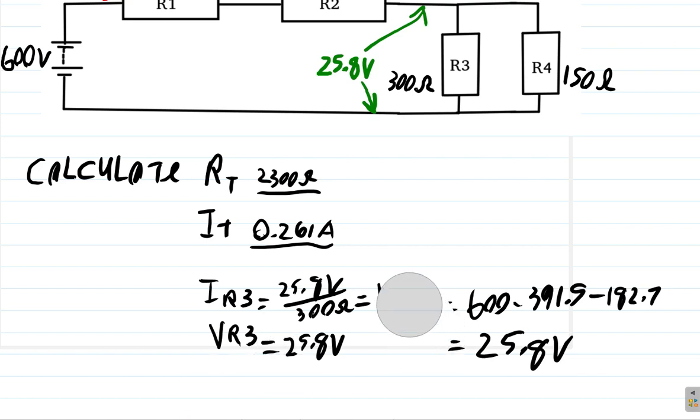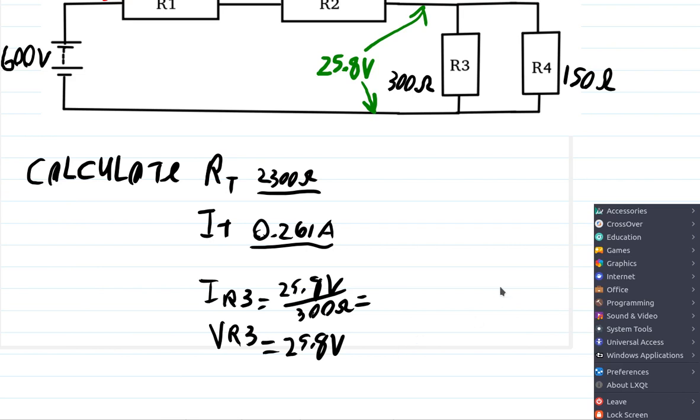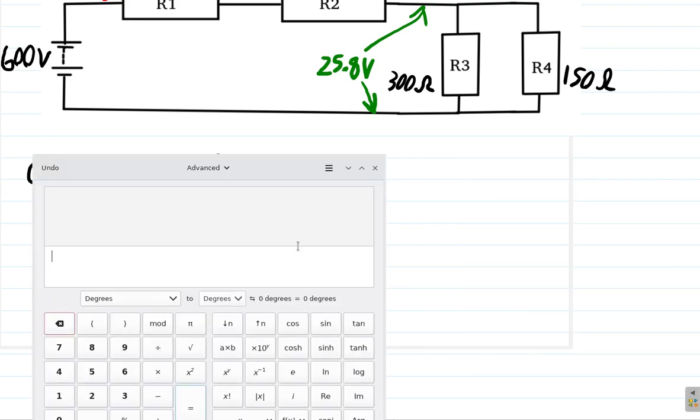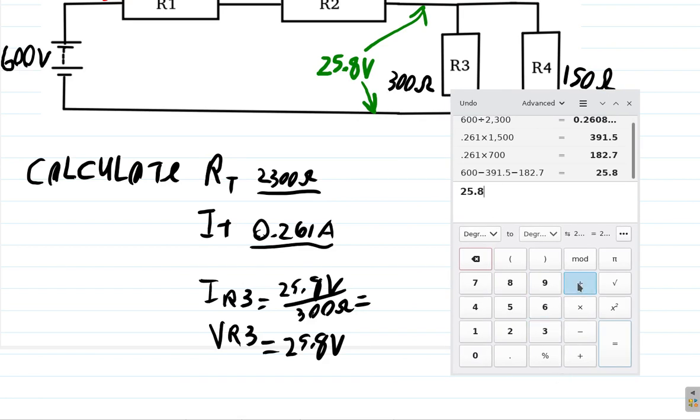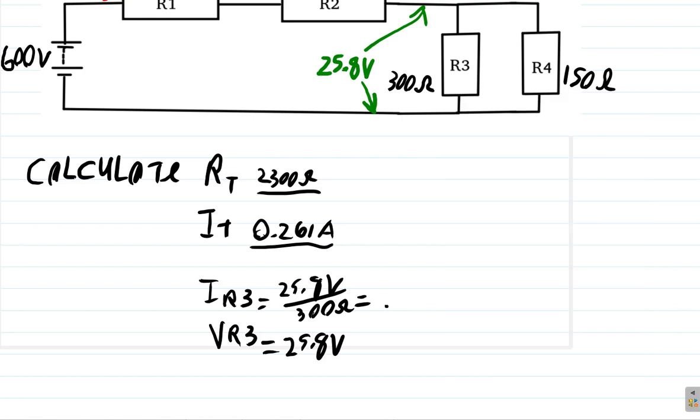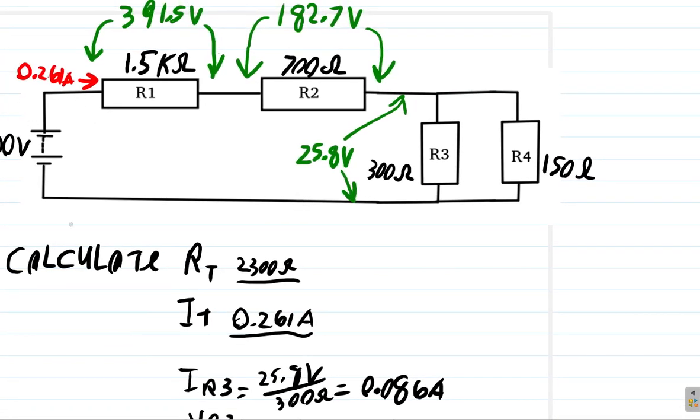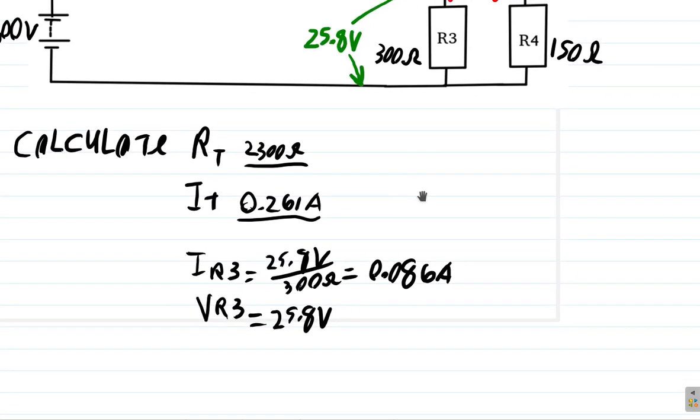What will that give us? So what we have here: 25.8 divided by 300 equals 0.086 amperes. So flowing down here will be 0.086 amps. So that's the current flowing through R3. So there we have that.